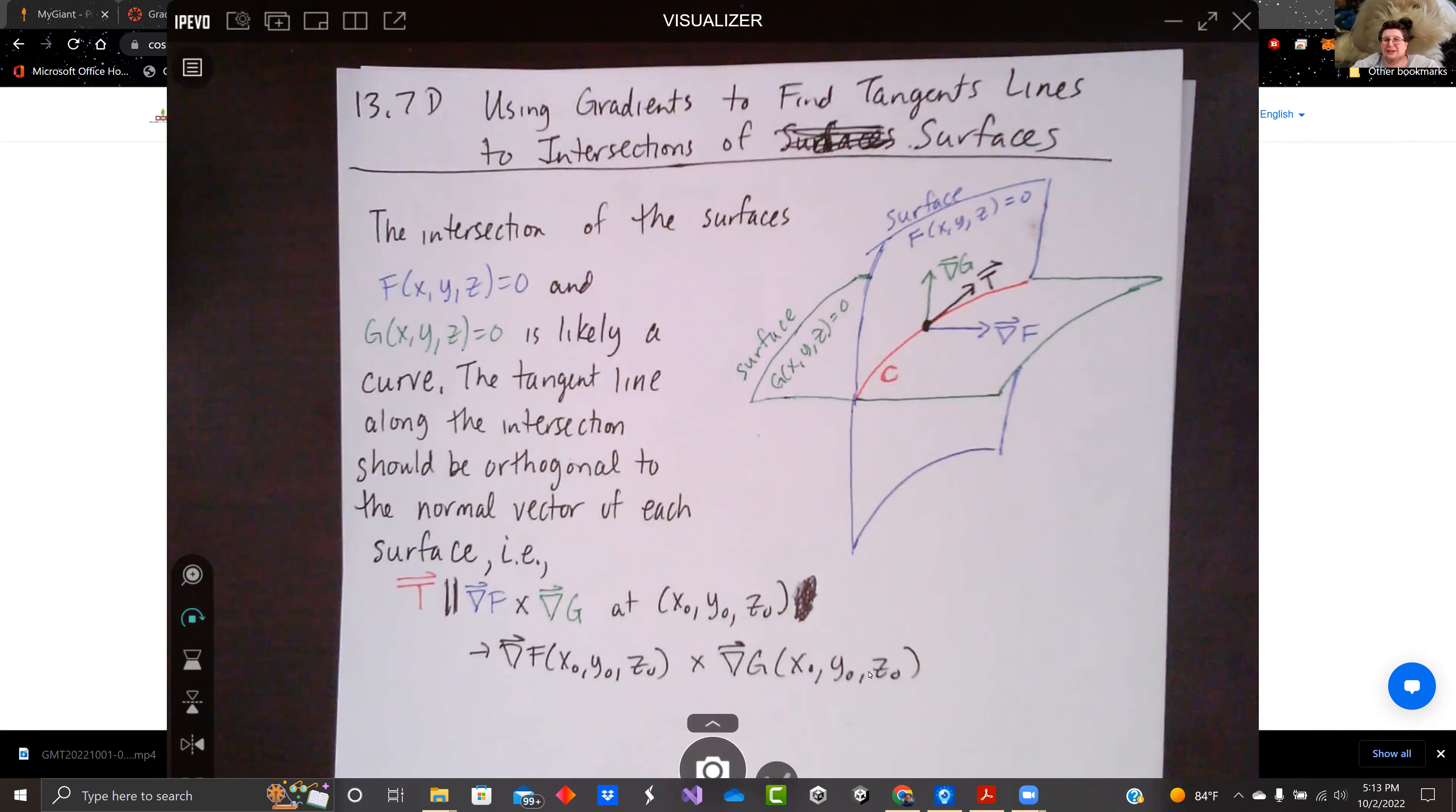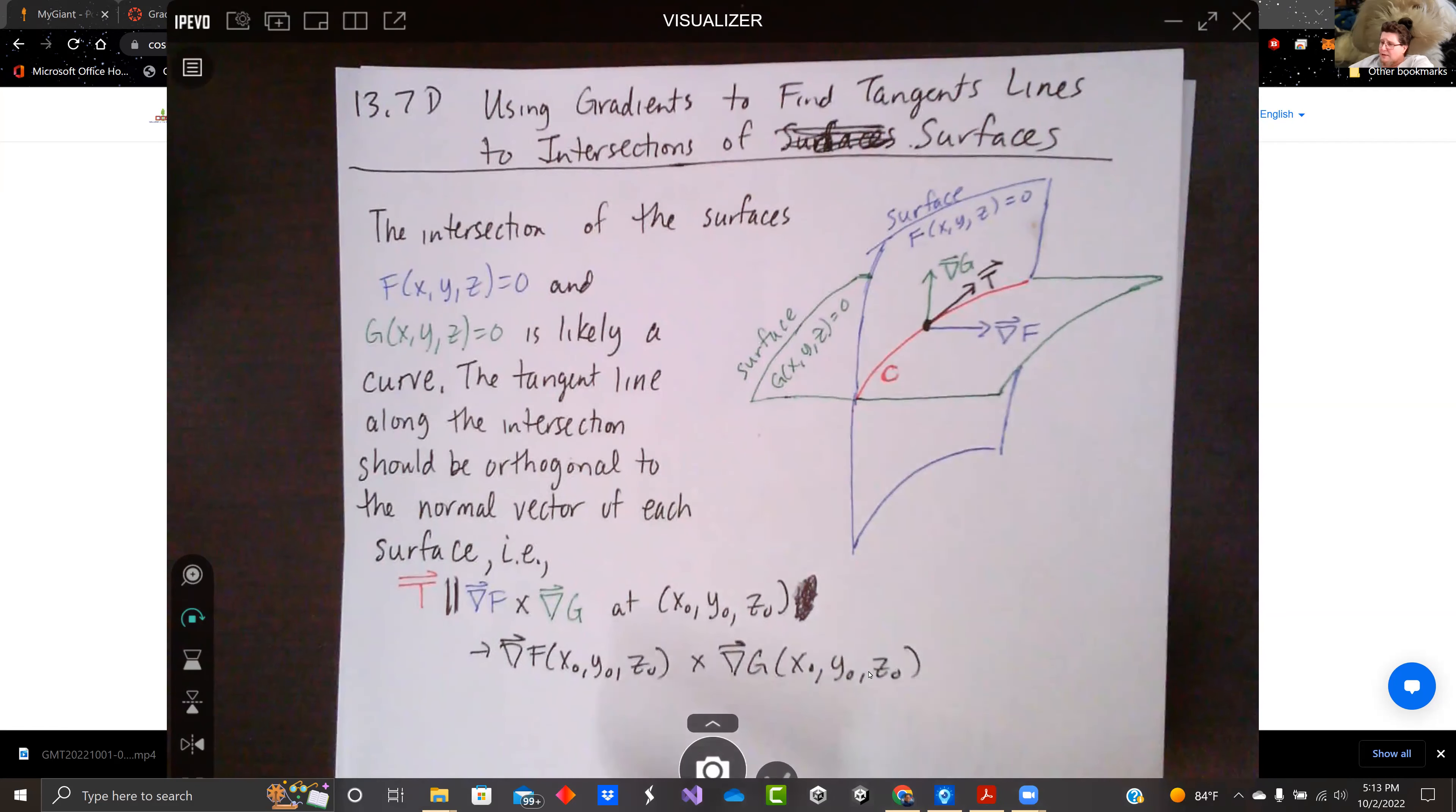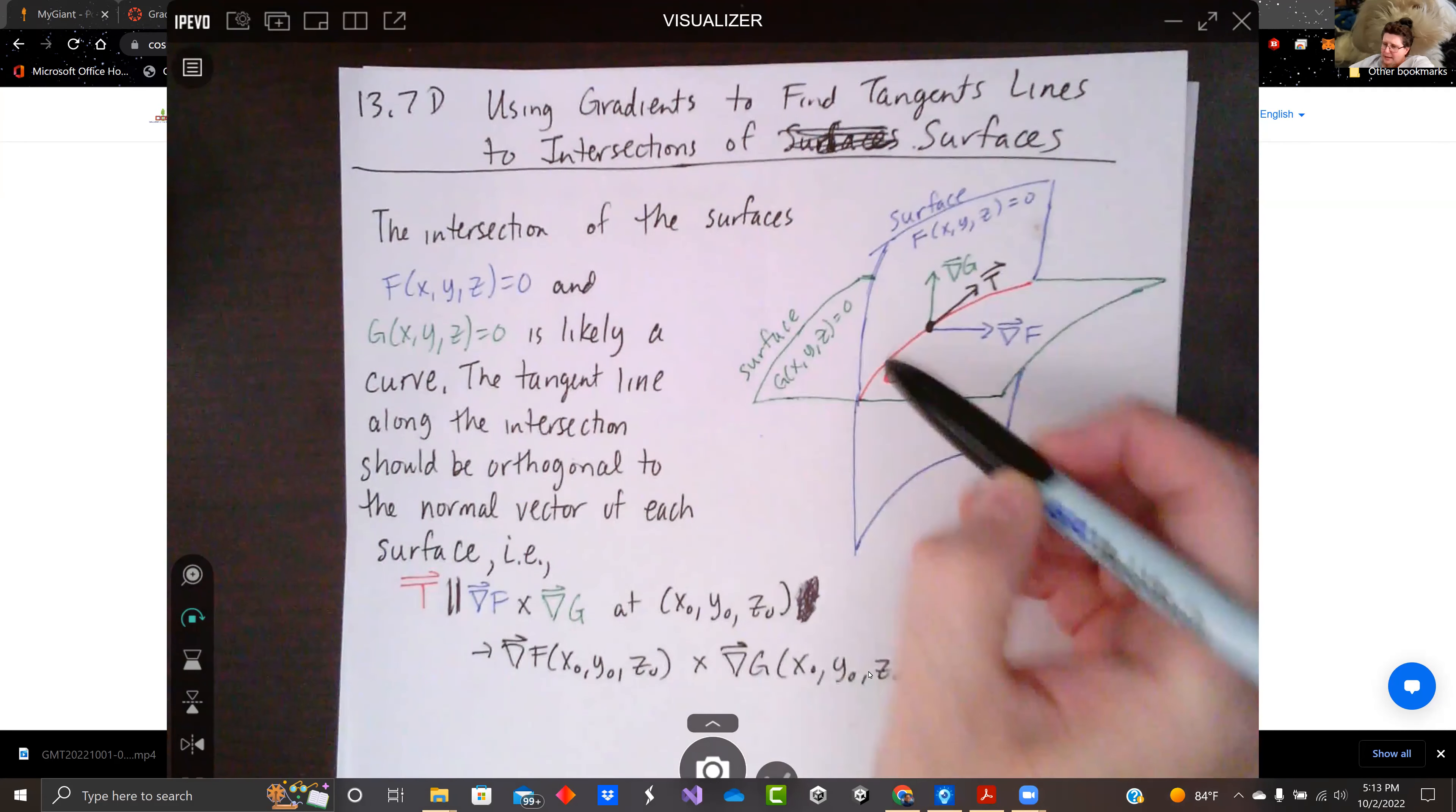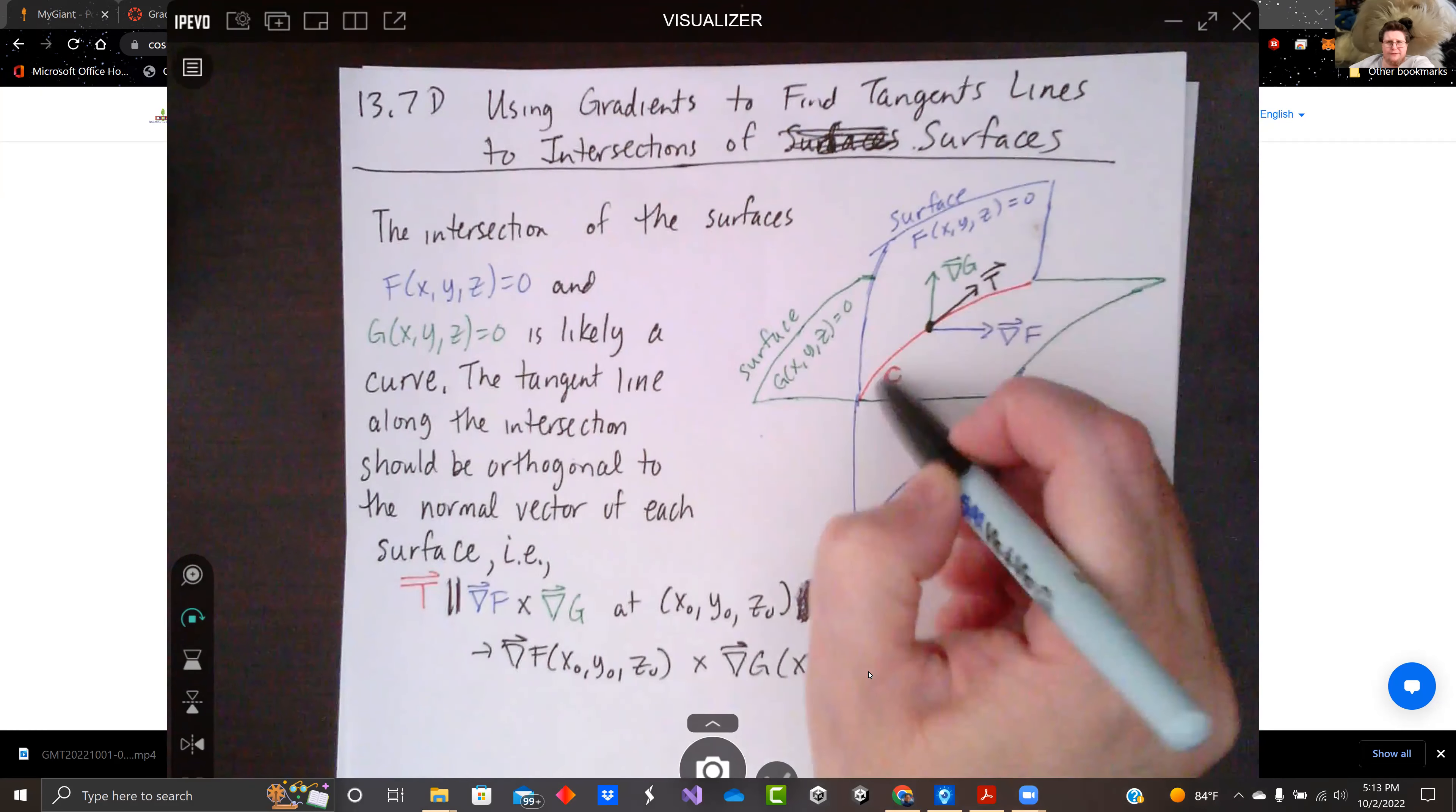Here we're going to use gradients to find tangent lines to the intersections of surfaces. So in my picture here, I have a surface F and G. The blue surface is F and the green surface is G. And where they meet, they intersect and make some curve C.